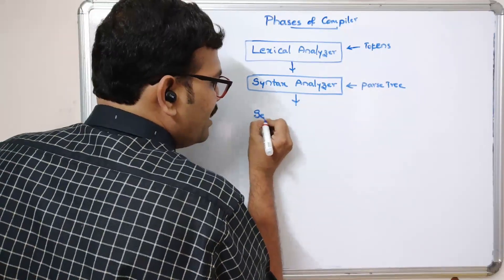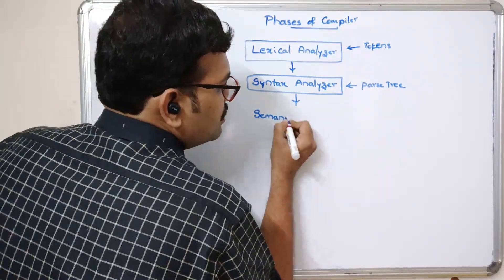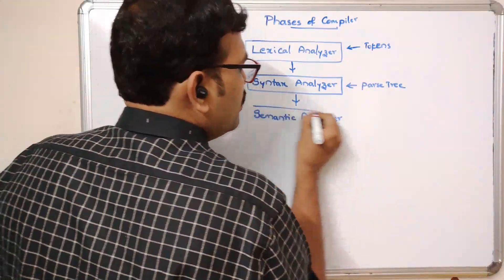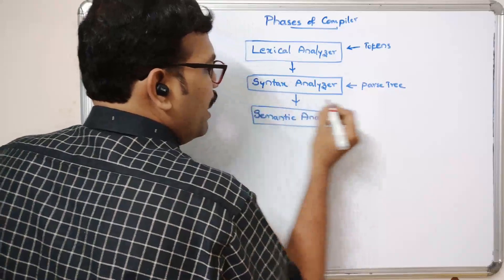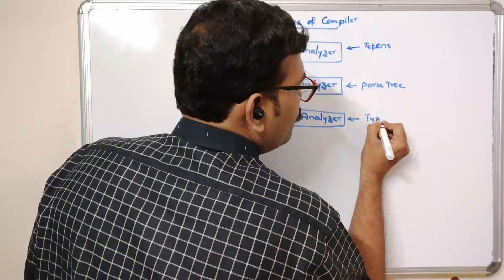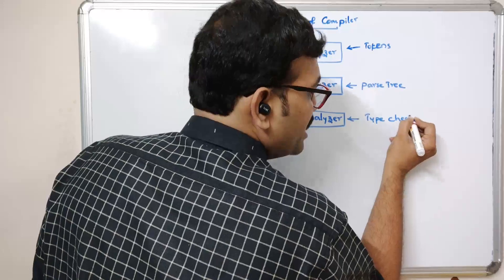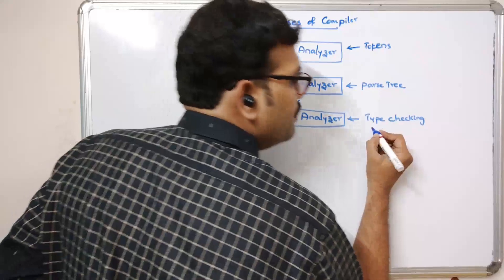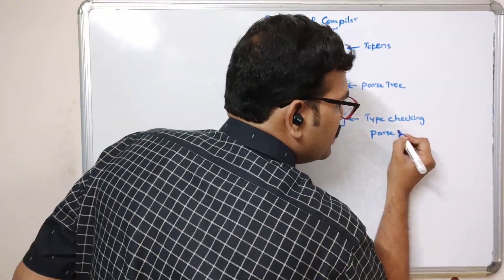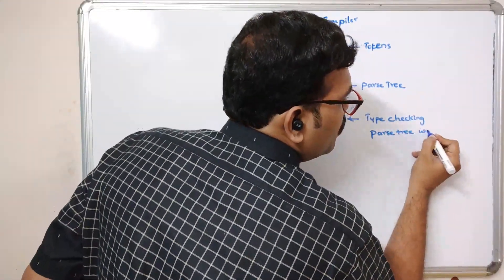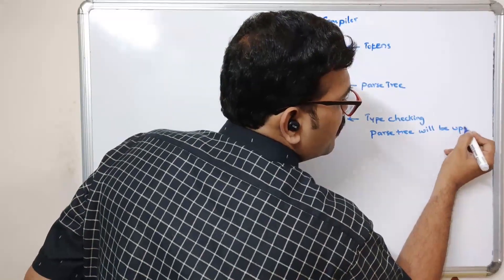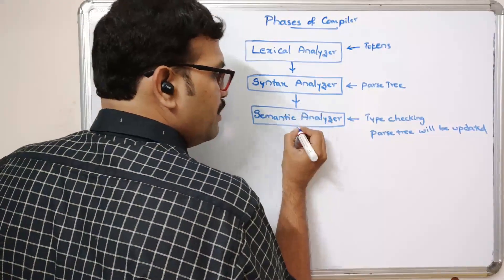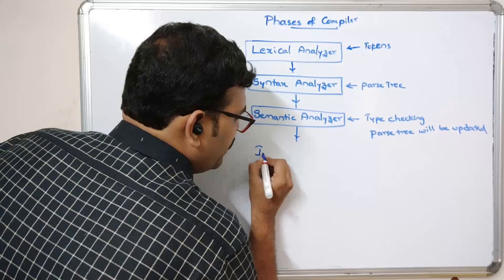The syntax analyzer constructs the parse tree, and the same parse tree will be given as input to the next phase — the semantic analyzer. Here the tree will be modified, and the main thing is type checking or typecasting will be done. The parse tree will be updated based upon the type checking.